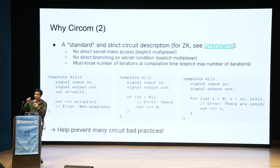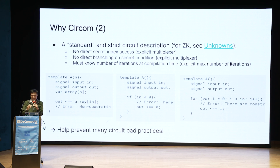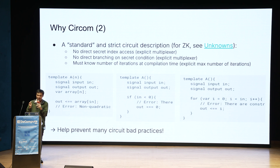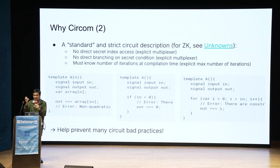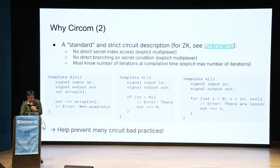If you look at other languages like Rust or Python, they are more familiar to many of us, but they don't have this strict circuit description. There will be a hiccup when you write, for example in MP-SPDZ, when you want to do branching you have to do an if-else structure that is not very intuitive compared to writing a normal Python program.